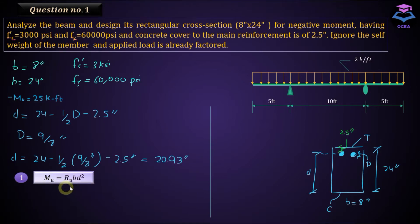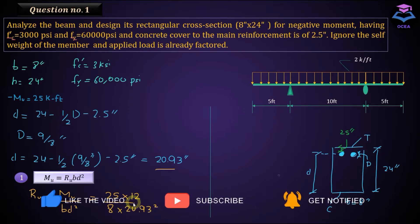Alright, now calculating Ru from this equation. Ru will be equal to Mu upon bd square, and Mu is equal to 25 kip fit. We need to convert it into kip inch by multiplying it with 12. And b is equal to 8 inches, that is the width of the section, and effective depth is equal to 20.93. Ru is equal to 0.0856.